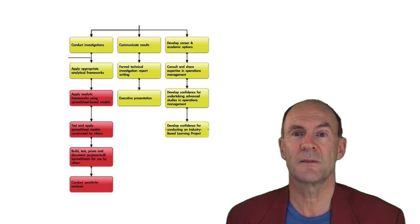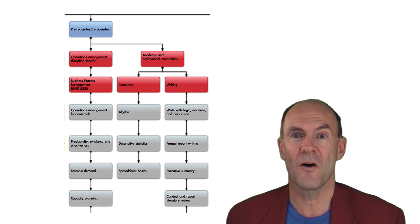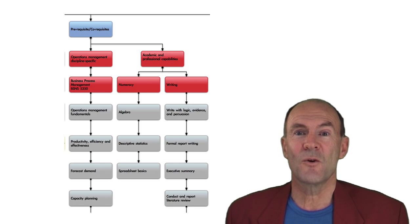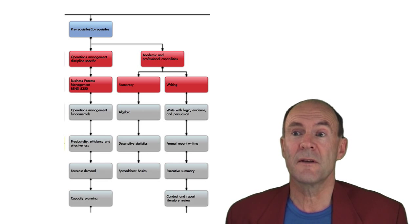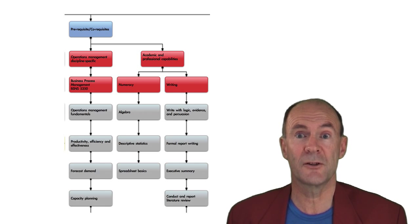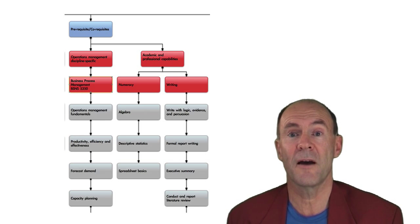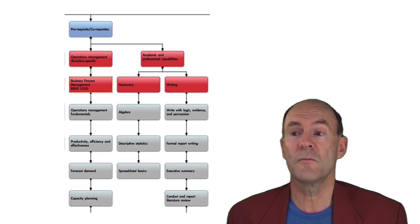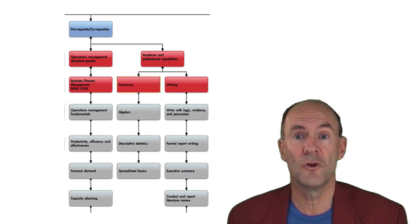This forms a capstone project as part of your studies in operations management. I want to talk now about the context of this course, Business Process Improvement and other courses in operations management at Unitec. This course is an advanced course in the undergraduate program. It assumes that you have studied some prerequisite courses in operations management and other management disciplines. In particular, it assumes that you've studied Business Process Management, BSNS 5350. It also presumes that you have academic professional capabilities in numeracy and writing.